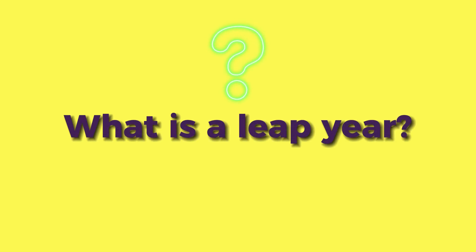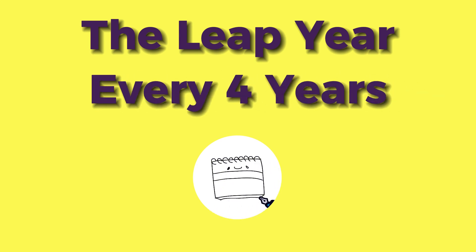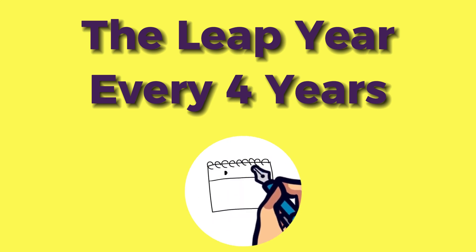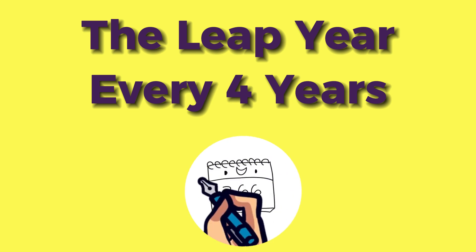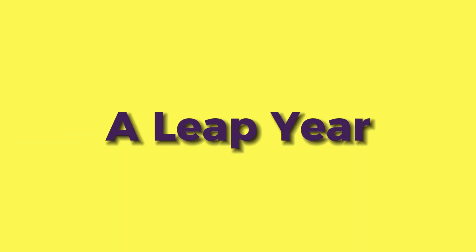What is a leap year? Approximately every four years, the month of February gets an extra day — it will have 29 days instead of 28 days, so that year will have 366 days in total. This is called a leap year.